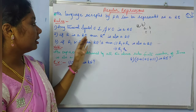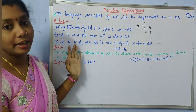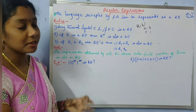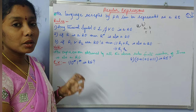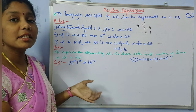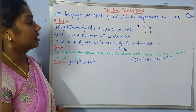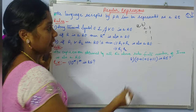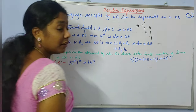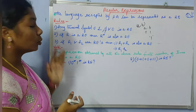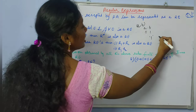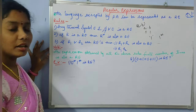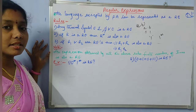Coming to the second rule: if r is a regular expression, then the closure of it is also a regular expression. Closure is represented as r star. So if r is a regular expression, then its closure is also a regular expression. For example, if 1 is a regular expression, then according to rule 2, I can say that its closure — 1 star — is also a regular expression.